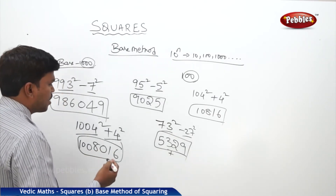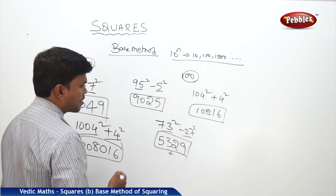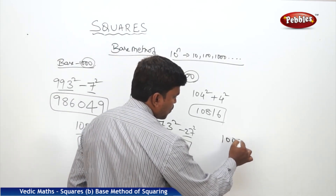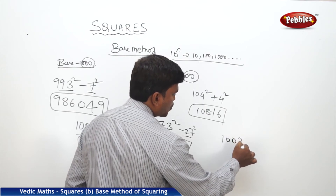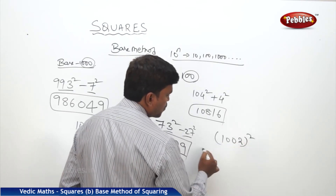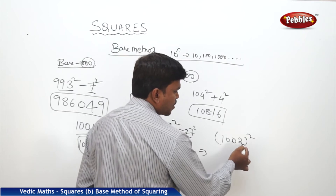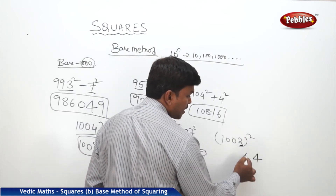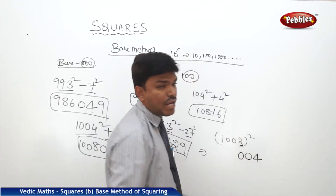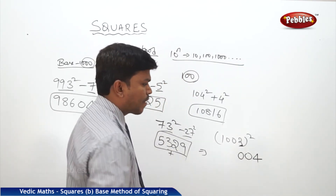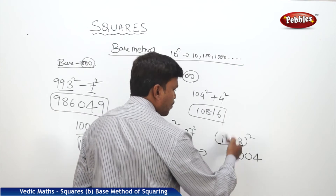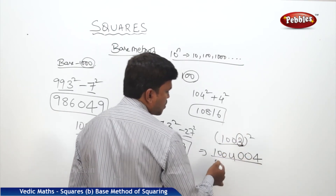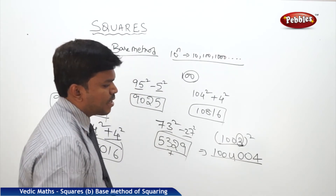One more example. I need 1002 square. How much more than the base? 2. What is 2 square? 4. But since we need 3 digits on the right side, write 004. Now 1002 plus 2 is 1004. So your answer is 1004004.